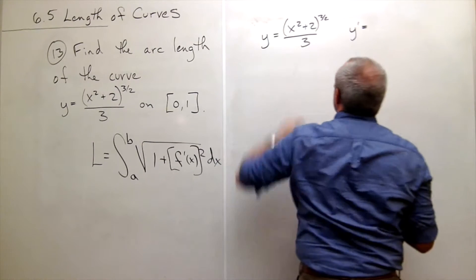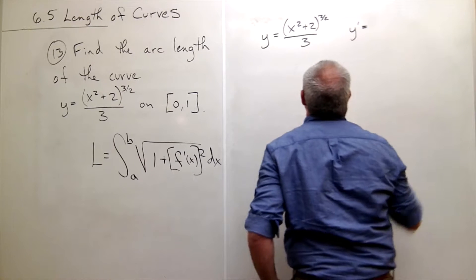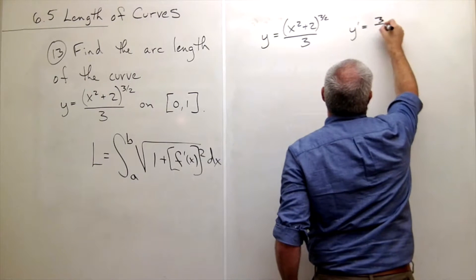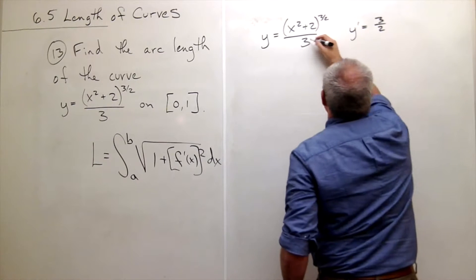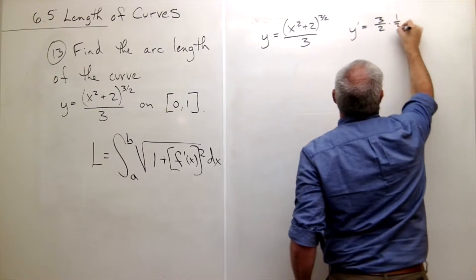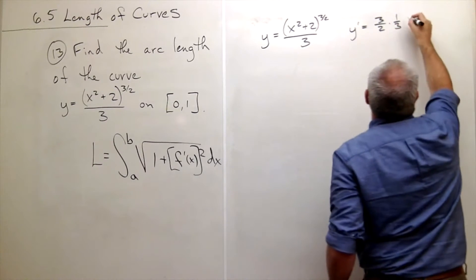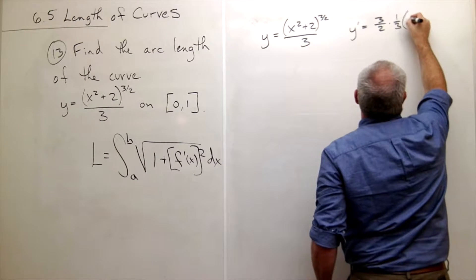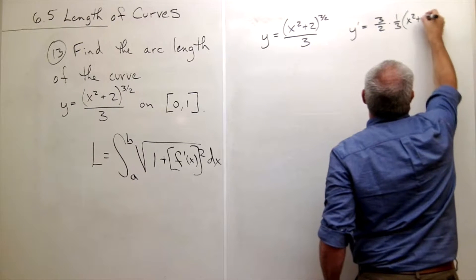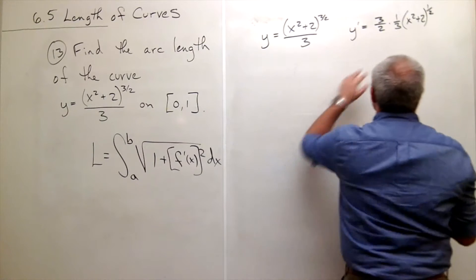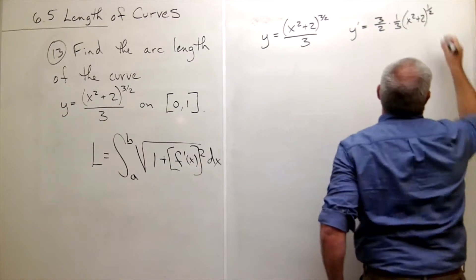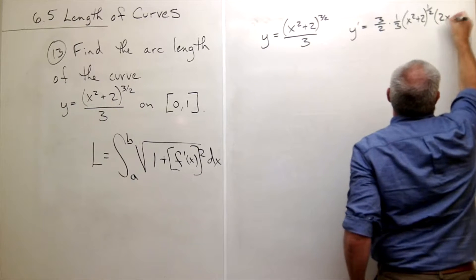And so y prime is equal to, if I bring down the 3 halves, I get 3 halves, and we've got this as still times 1 third because of this 3 on the bottom, times x squared plus 2 to the 1 half times the derivative of what's inside by the chain rule, so times 2x.